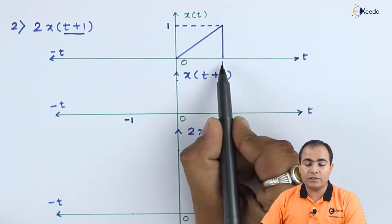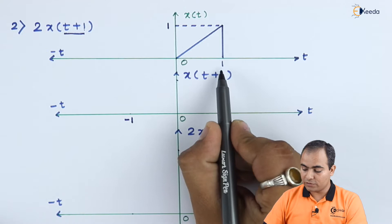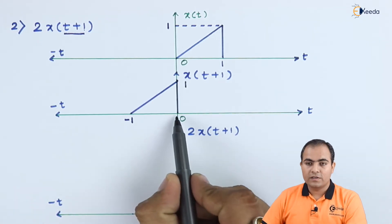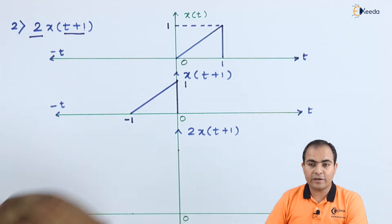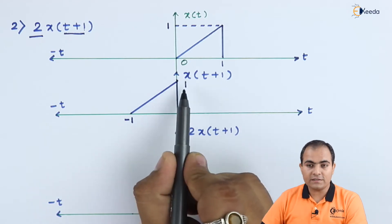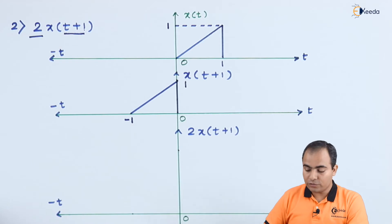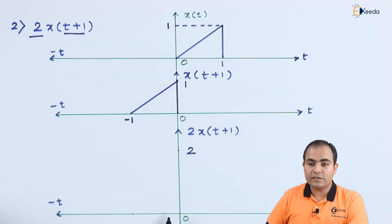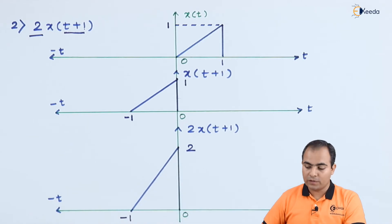Every instance also gets shifted to the left by 1. The graph starts at 0, so now it starts from minus 1, and since it was terminated at 1, it will now terminate at 0. Amplitude does not change. This is the result after time shifting. Next, amplitude scaling: the whole function is multiplied by 2, so whatever amplitude we had — which is 1 — gets multiplied by 2, giving a new amplitude of 2. The time instances remain at the same positions; only the amplitude is changed from 1 to 2.